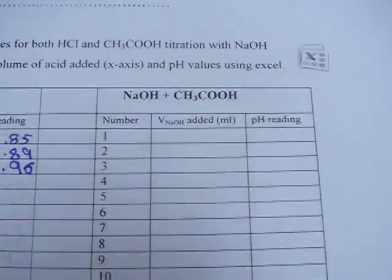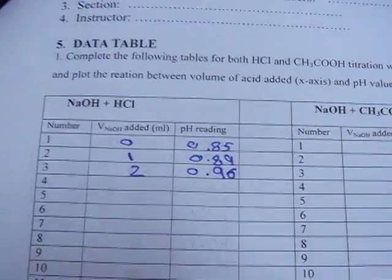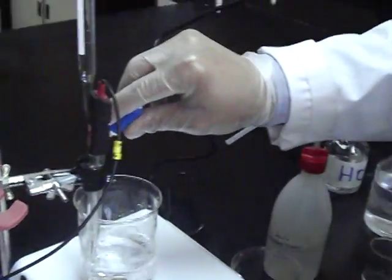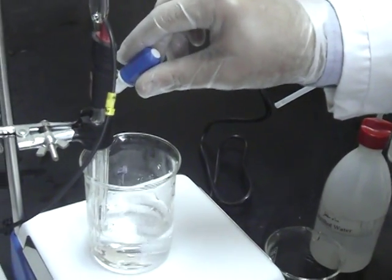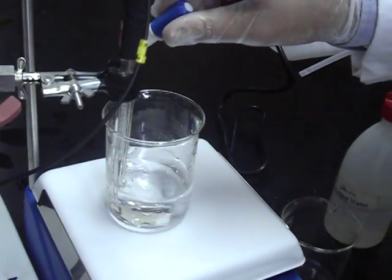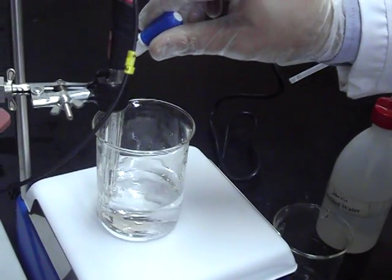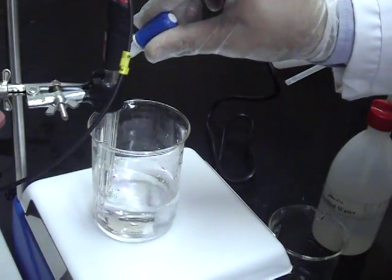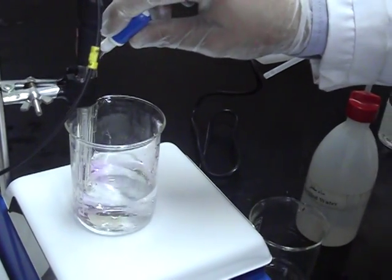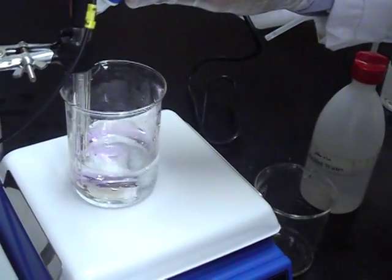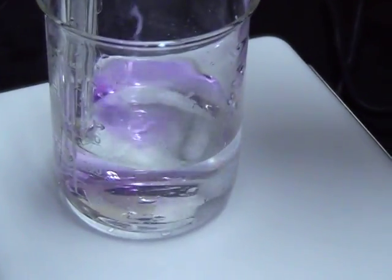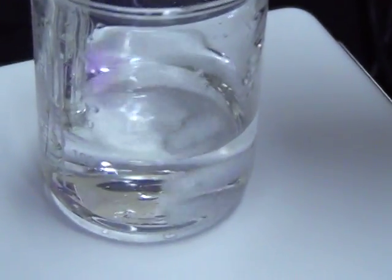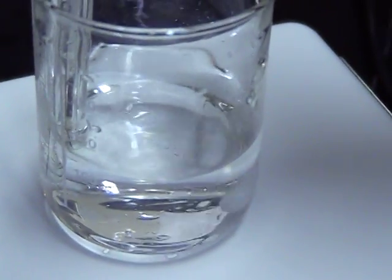Until the color of your solution starts to change. Because you can see the phenolphthalein change its color from acidic solution to basic when we add the sodium hydroxide, to be pink in color. So the more you add, the more pink you will get.